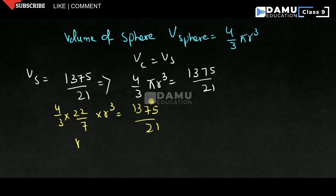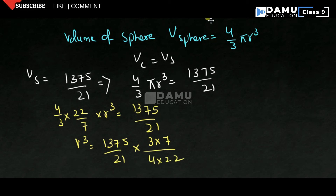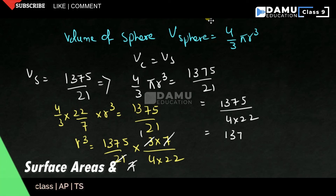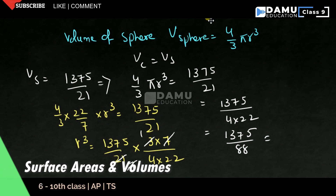Shift all these values to the right side. r³ will be equal to 1375/21 into 3 into 7, all divided by 4 into 22. Now cancel these values: 3 ones, 7 ones. That implies r³ = 1375 divided by 4 into 22, which is 1375 by 88. We are getting 15.625. So r³ = 15.625.